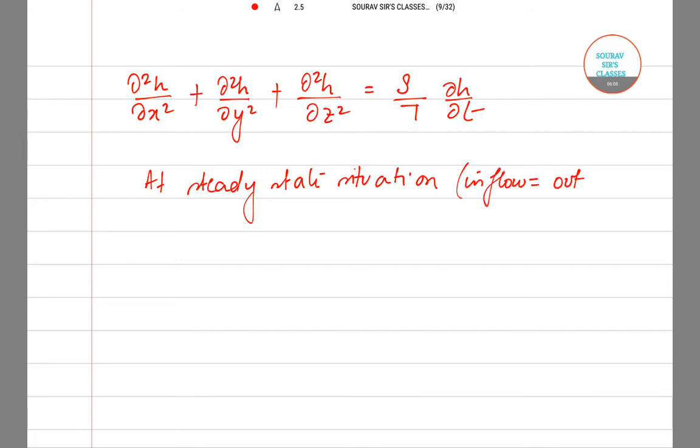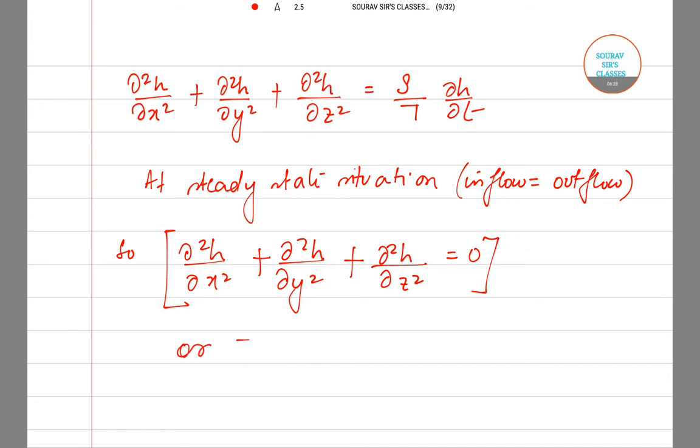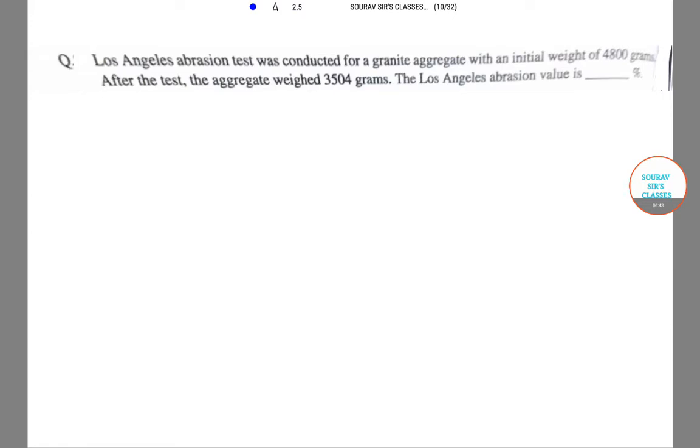Now if you look at the steady state situation, at steady state we actually have inflow equal to outflow. So we can write del²h/del x² plus del²h/del y² plus del²h/del z² equals zero, or we can write it as ∇²h = 0, which is the Laplace equation. This is the required condition.